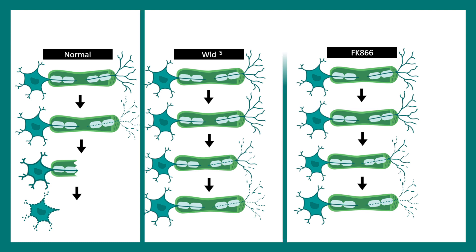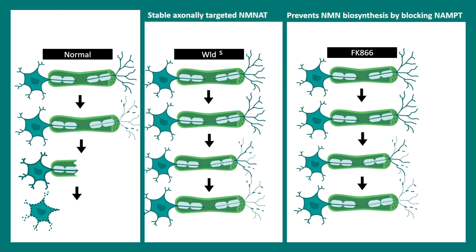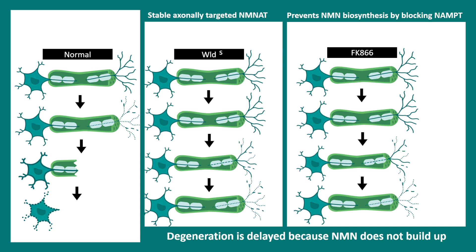Scientists also blocked specific pathways that lead to the biosynthesis of NMN and found that axonal degeneration was also slower. That means NMN is the main culprit. If NMN accumulates in the neuron, or there is an overall increase in the cytosolic concentration of NMN, that might aggravate the process of degeneration. In a mutant where NMN could not build up quickly, or in a pharmacological scenario where you block NMN biosynthesis, both cases show protection against Wallerian degeneration — bringing out the important role of NMN in the axonal degeneration process.